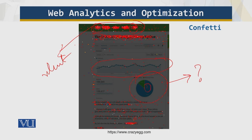These tools are available and for a certain subscription fee — which is not very high — one can subscribe to them and generate confetti graphs and heat maps. Now I will show you in real time using GT Metrix.